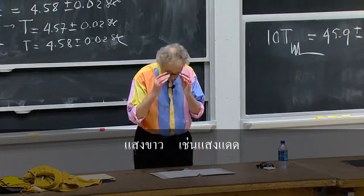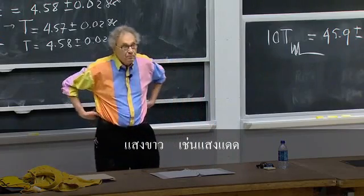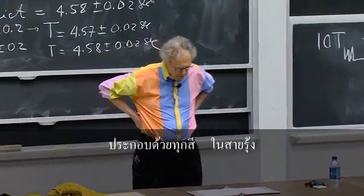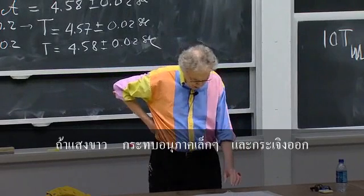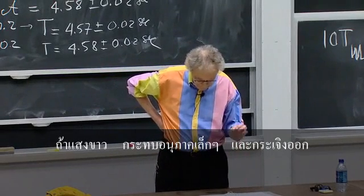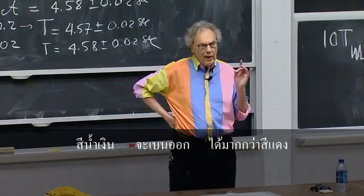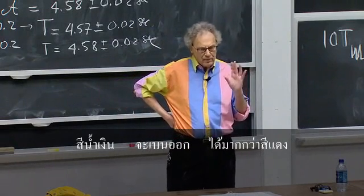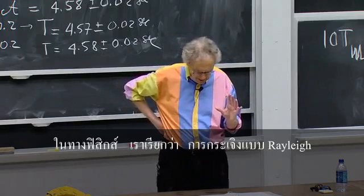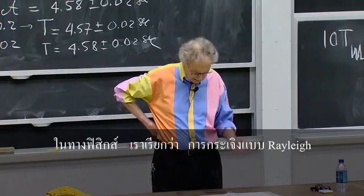White light, like sunlight, is composed of all the colors that you see in the rainbow. If I scatter white light off very small particles, then the blue light is scattered more than the red light, and we give that a name in physics — we call that Rayleigh scattering.